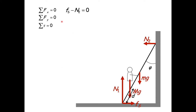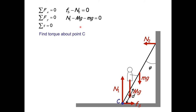We can write the force equation in the x direction: the normal force from the wall pushes to the left, and f_s pushes to the right, so f_s minus N₂ equals zero. In the y direction, N₁ minus capital Mg minus lowercase mg equals zero. For the torques, we choose pivot point C, giving: capital MgD sin(φ) plus mgL/2 sin(φ), both in the clockwise direction, where we use sin(φ) to get the component perpendicular to the radial distance from C.